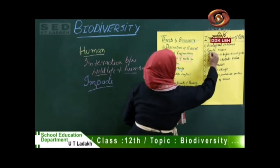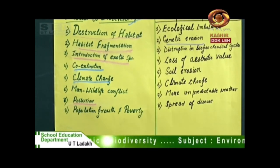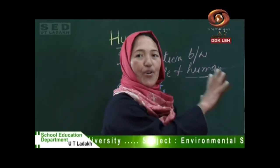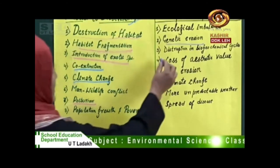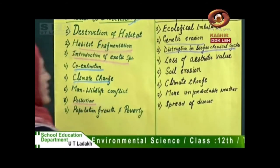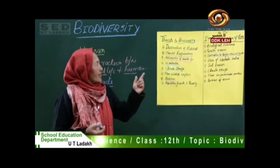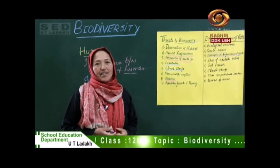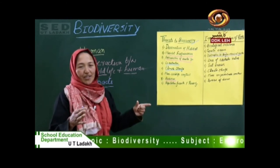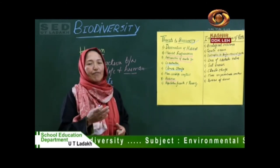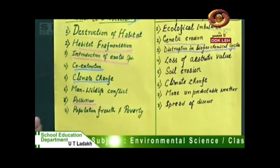Second is genetic erosion — loss of species at the genetic level means they are extinct forever. Third is disruption in the biological cycle. Biodiversity helps maintain the biogeochemical cycle; when there is a disturbance in biodiversity, the whole biogeochemical cycle is disturbed, which is necessary for everybody to exist on this earth.